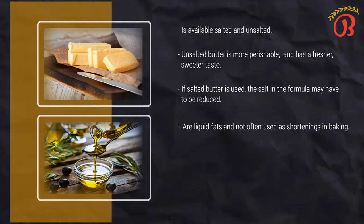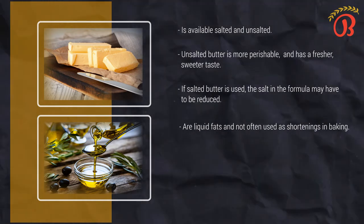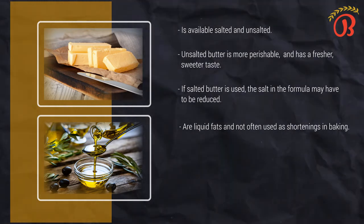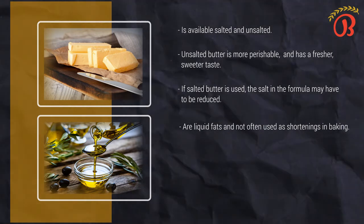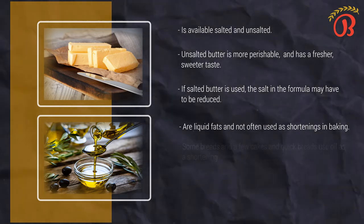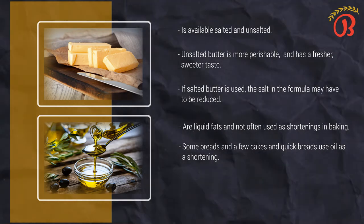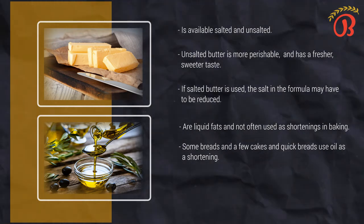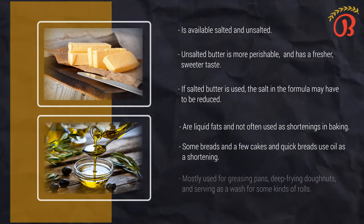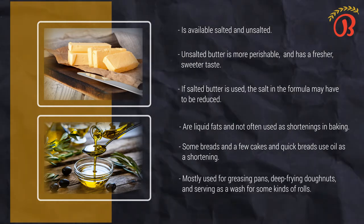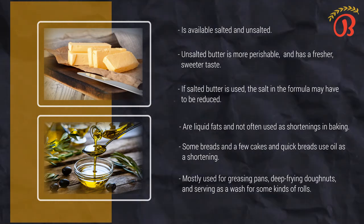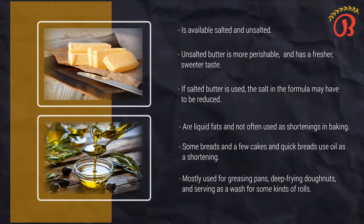Oils are liquid fats. They are not often used as shortening in baking because they spread through a batter or dough thoroughly and shorten too much. Some breads and a few cakes and quick breads use oil as a shortening. Beyond this, the usefulness of oil in the bake shop is limited primarily to greasing pans, deep frying donuts, and serving as a wash for some kinds of rolls.